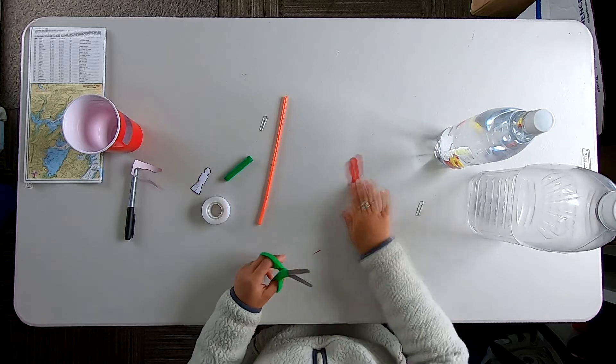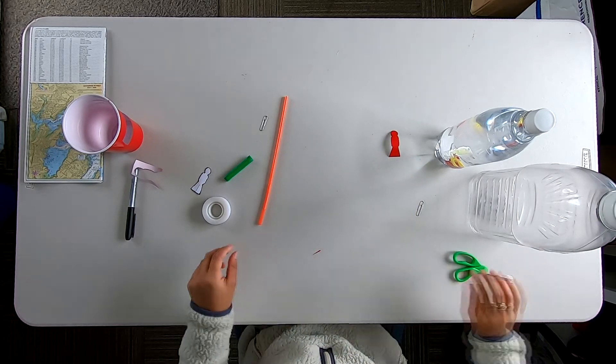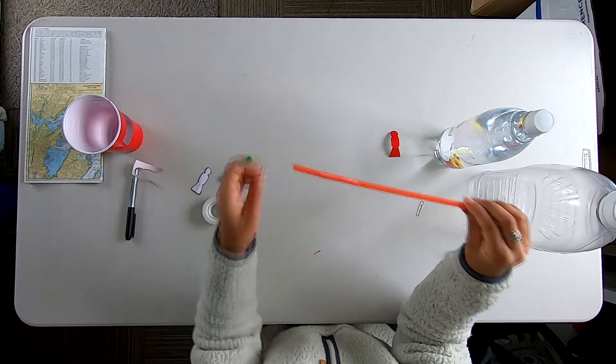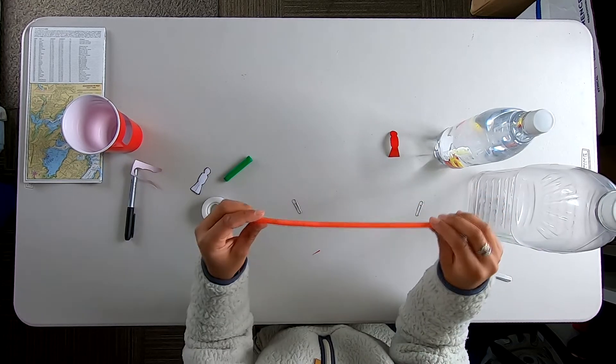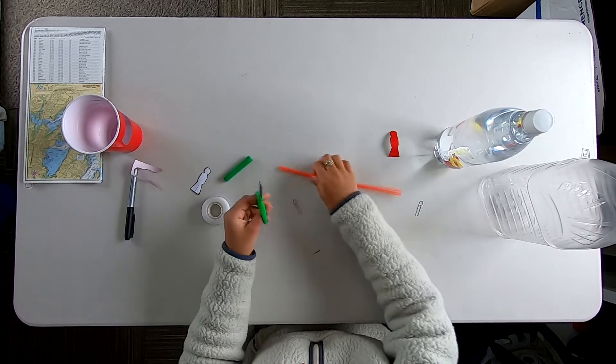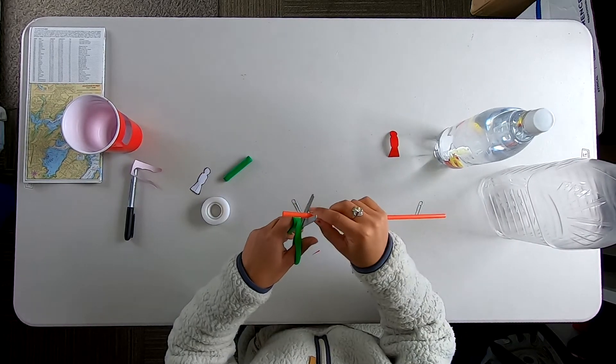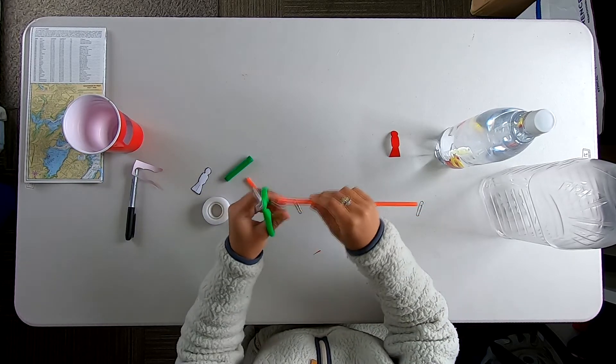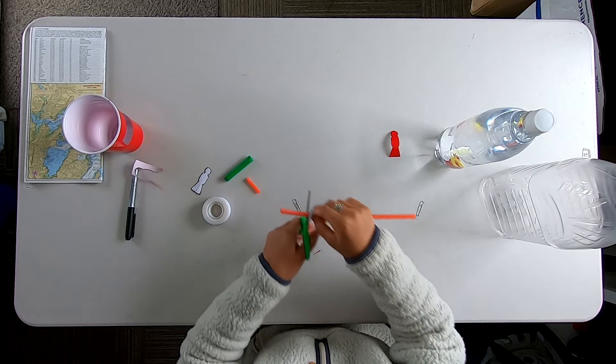Alright, so we're going to go ahead and place him aside. We're going to take our bendy straw and our paper clip and make his diving tank. So I'm going to take my scissors and cut out the bendy part of the straw. That's the part that we're going to want to use for this activity.